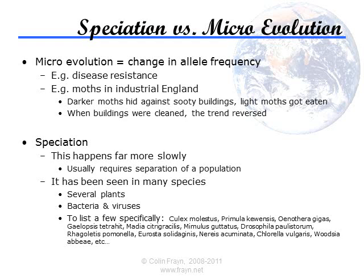Creationists quite rightly point out that this is not evidence of speciation — it's just evidence for dark-coloured moths becoming more prevalent. All that changed is that a gene controlling pigmentation became more frequent, and another became less so. There is no new information here and no new species. It's similar to what probably happened to the evolutionary relatives of Caucasians after leaving Africa: because sunlight in northern latitudes was less powerful, those with lighter skin absorbed more of it, reducing the risk of vitamin D deficiency — but that doesn't make Caucasians a separate species.